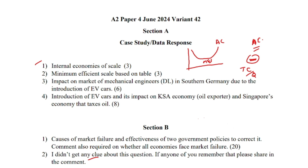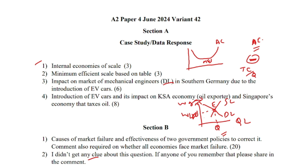Another case study question was about the impact on the market for mechanical engineers in southern Germany due to the introduction of EV cars. Because automation is taking place, demand for mechanical engineers will decrease, wages will fall, and employment will also fall. On a labor market diagram with wage rate on the y-axis and quantity of labor on the x-axis, the demand for labor curve shifts to the left, moving equilibrium downward — wages decrease and employment decreases.